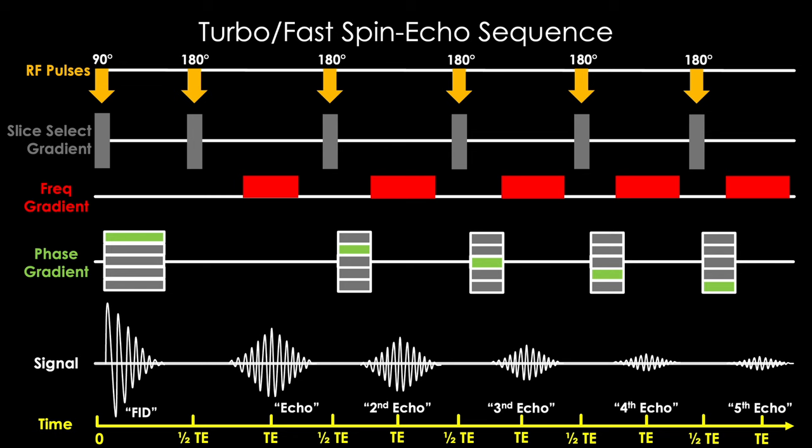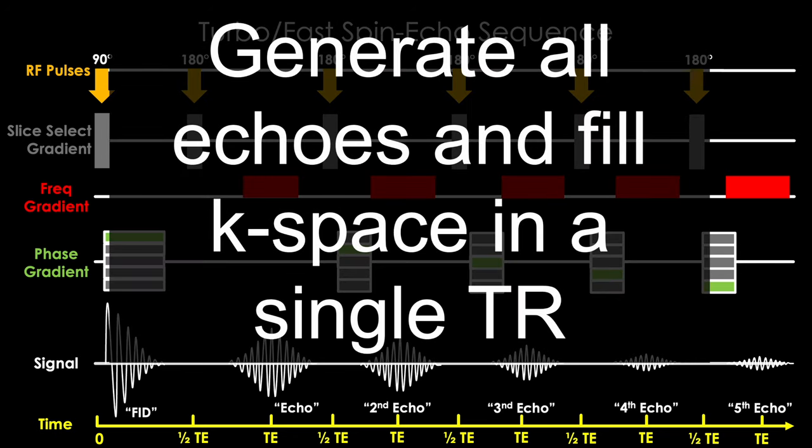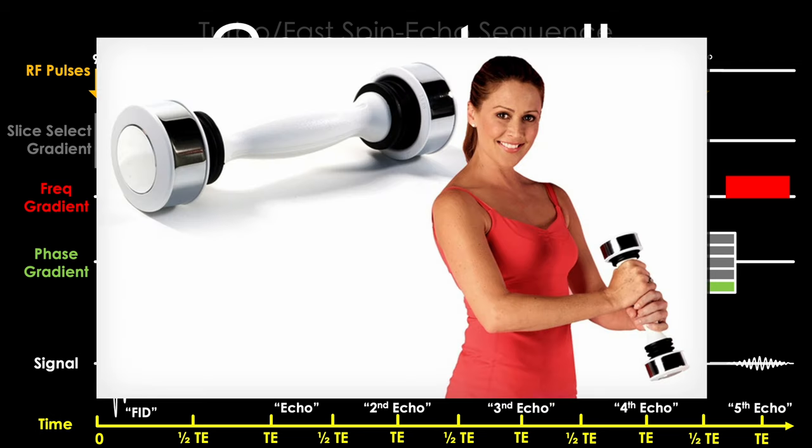If we did this, we could generate all the echoes needed to fill K space and generate an image under a single TR. Well, back then this person clearly would have been labeled insane and committed to an asylum, and the idea of a faster MRI pulse sequence would be lost in the bucket of other brilliant ideas that society dismissed like the Shake Weight.